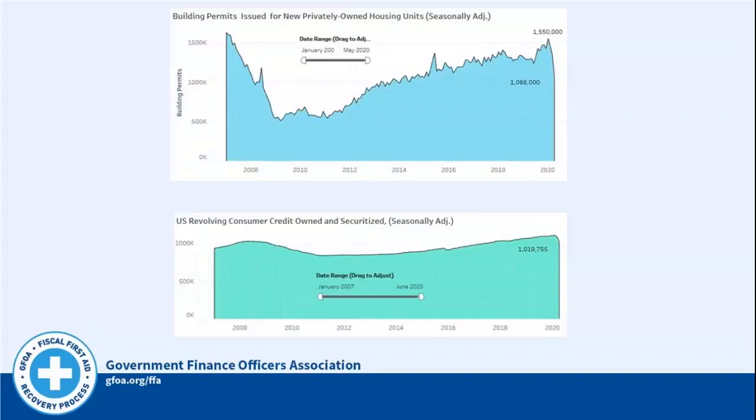Building permits have dropped off quite precipitously. A lot of the construction and things that would normally be occurring in these uncertain times has probably been the case in many of your own municipalities. Another interesting indicator is revolving consumer credit owned and securitized — also known as credit card debt outstanding. The steadily rising, strong economy has started to come off a little slope. Consumers are fearful of the future, incomes are uncertain, and financials are tightening — and that's going to impact things like your sales tax.